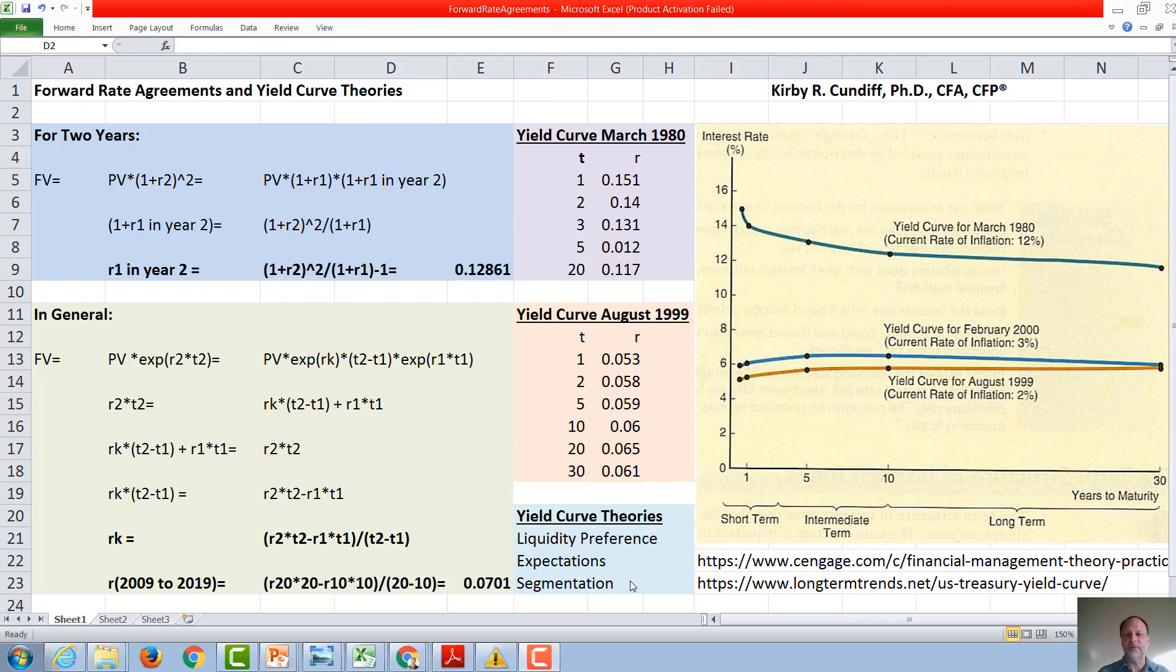The final theory, segmentation theory, is based on the idea that each of the different maturities trade in a different basket, and their yield is actually independent of the other due to the desires of investors that want to invest in that basket.